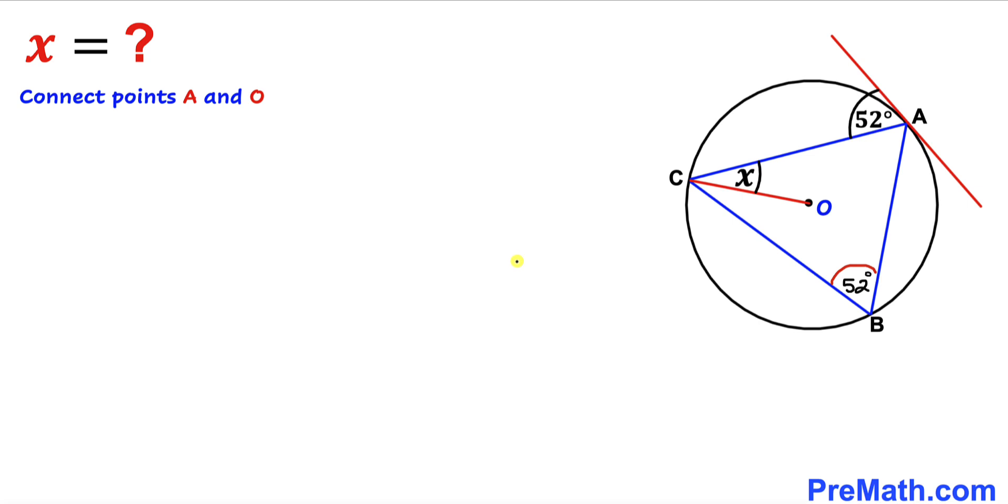And here's our next step. Let's draw an auxiliary line by connecting this center O with this point of tangency A. Let me connect these two points. And here's our much nicer looking diagram.